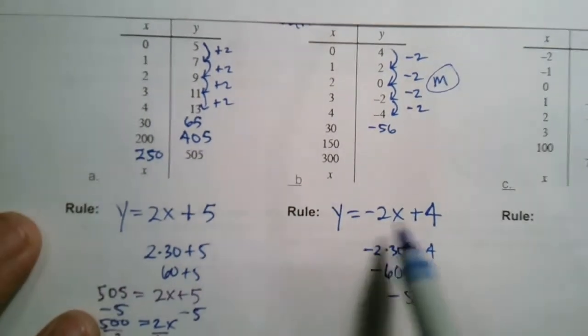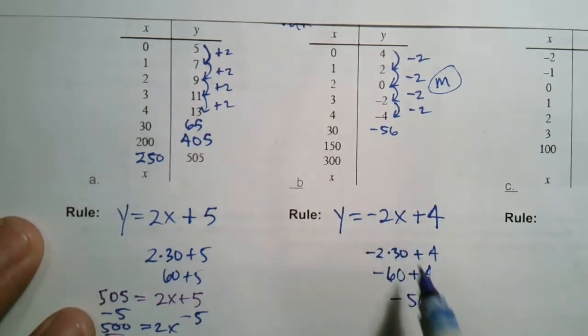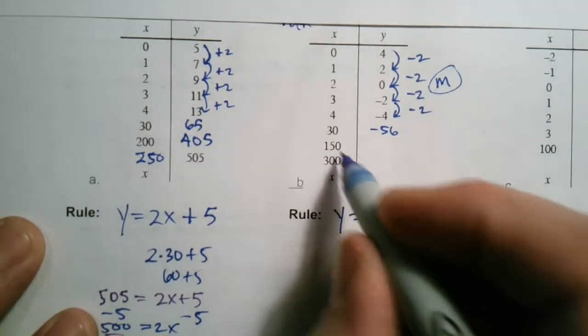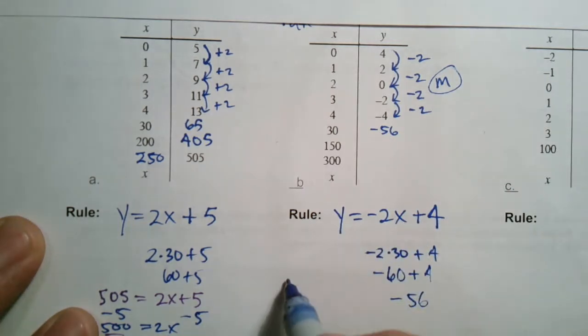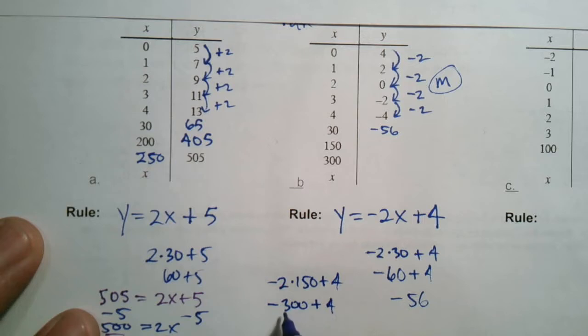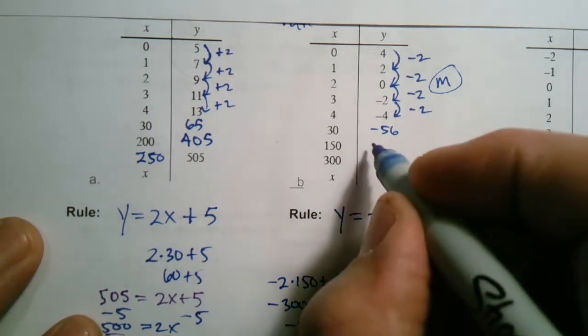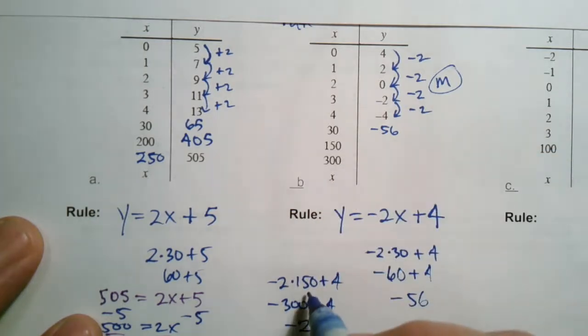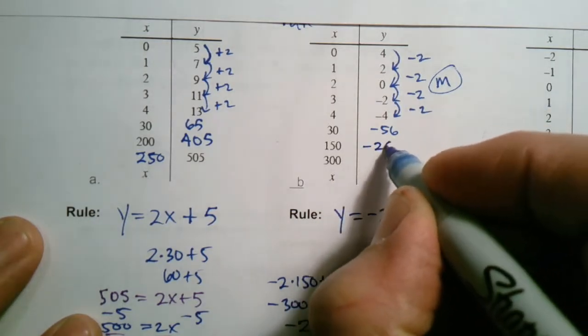All right? So do the same thing. I can just continue to plug in now my x's. So I'm going to say negative 2 times, I'm going to do my math over here, negative 2 times 150 plus 4. So negative 2 times 150 is negative 300 plus 4. When you have a negative and a positive number, you're actually subtracting. The big one keeps its sign. So that's negative 296 when I add 4 to negative 300. So I get for 150, I get negative 296.